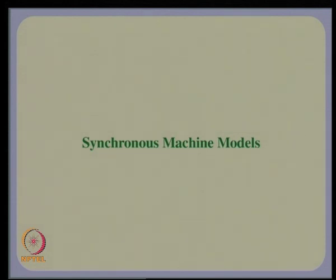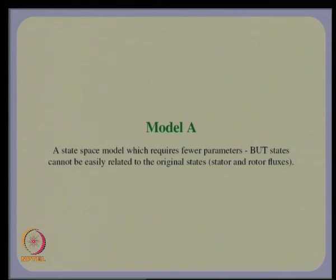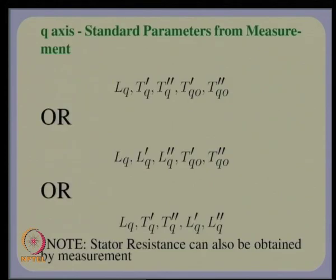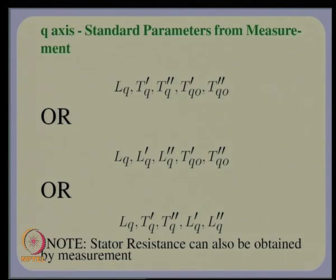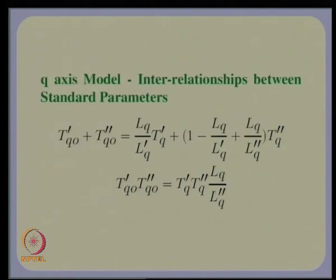Looking at the synchronous machine models — that is, the state space models — we discussed Model A, which requires fewer parameters. We use directly the standard parameters, but the states cannot be easily related to the original states, which are the stator and rotor fluxes. We do retain the stator d and q axis flux state variables, but the rotor flux variables are not retained in this model. On the q axis, the standard parameters from measurements may be specified in terms of four time constants and an inductance, or three inductances and two time constants. In any form you may get this data, the time constants and inductances are related by a certain relationship, so they can be interchangeably used.